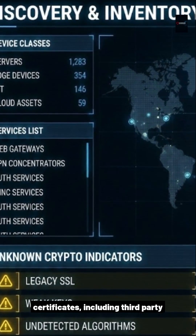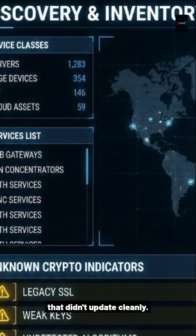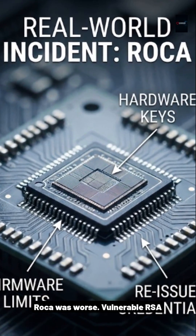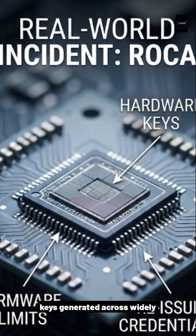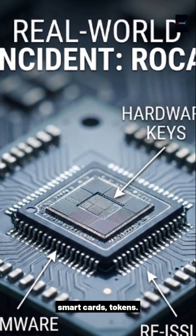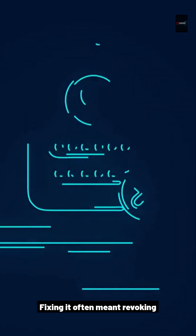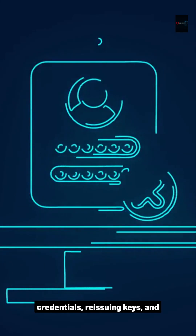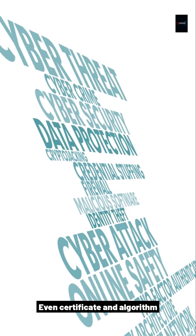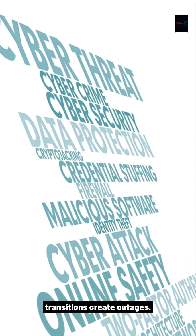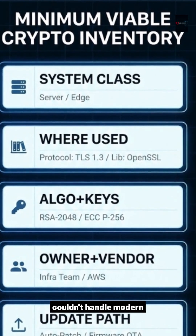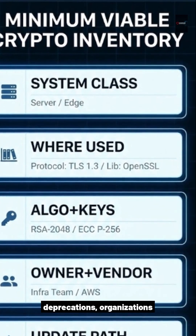Organizations spent weeks figuring out which systems had the vulnerable library, then patching, then rotating keys and certificates — including third-party and embedded devices that didn't update cleanly. ROCA was worse: vulnerable RSA keys generated across widely deployed secure hardware — TPMs, smart cards, tokens. Fixing it often meant revoking credentials, reissuing keys, and dealing with firmware constraints and manual remediation.